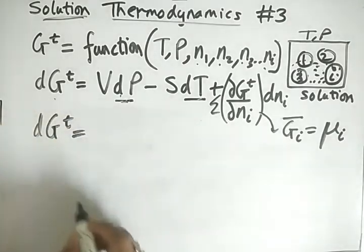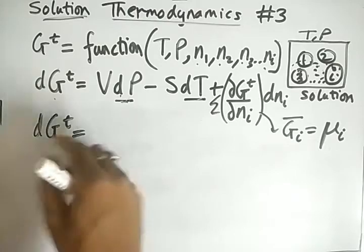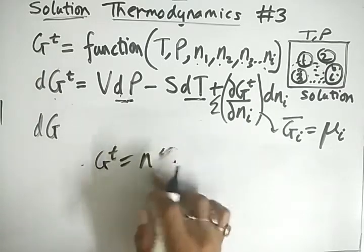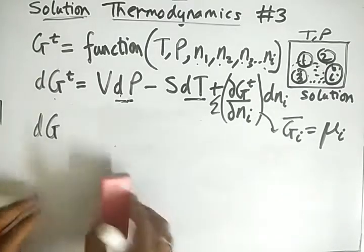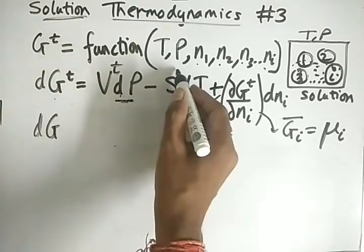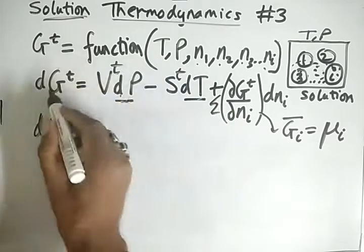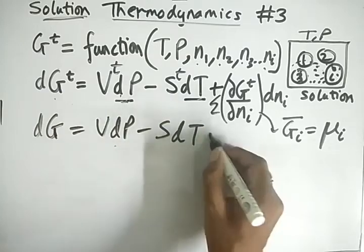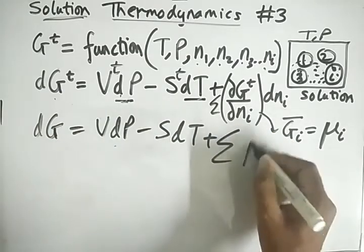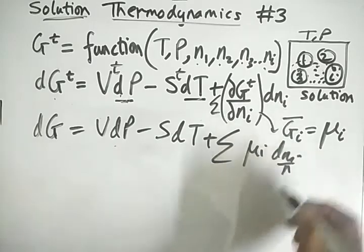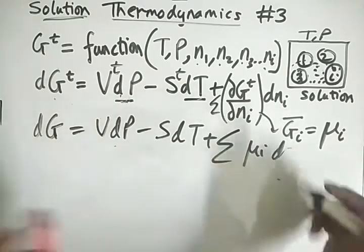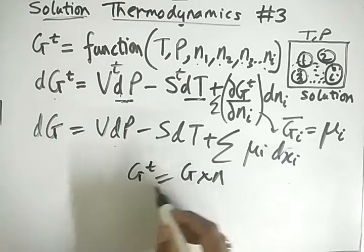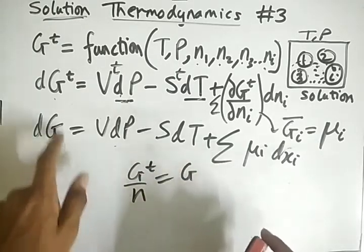Now, since Gt equals n times g, we can divide through by n. This gives dg equals VdP minus SdT plus the summation of mu-i times dni over n, where ni over n is the mole fraction xi. So we have obtained the molar form of the Gibbs energy equation.